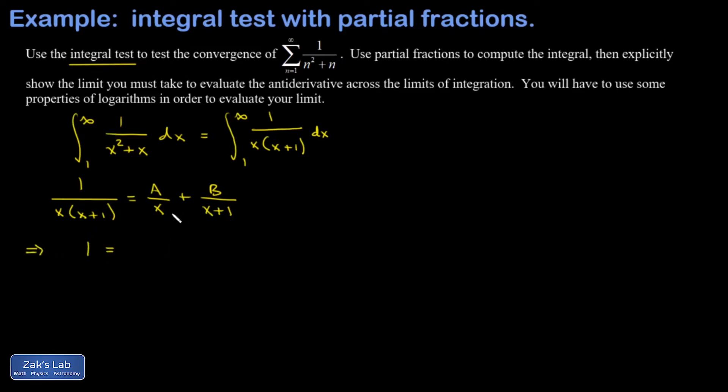When I distribute that x times x plus one to this A-containing term, the x's are going to cancel and I have A times the quantity x plus one.